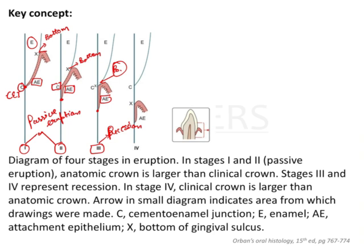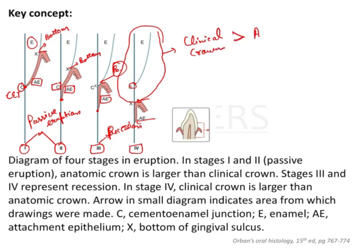In Stage 4, both the bottom of the sulcus and the apical end of the attached epithelium are apical to the CEJ. Whatever is seen in the oral cavity in Stage 4 is this large — the clinical crown is larger than the anatomic crown. The anatomic crown is the enamel-covered portion of the tooth. In Stage 1 and Stage 2, the complete enamel is not exposed, so the clinical crown is shorter than the anatomic crown.